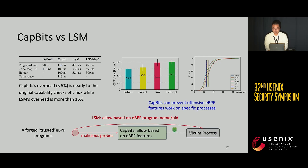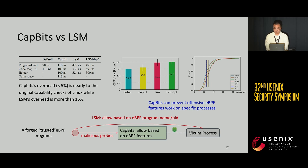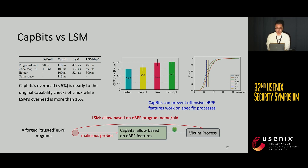Compared with LSM, cap-bit overhead is nearly equivalent to the original capability check of Linux, while LSM's overhead is more than 15%. Moreover, cap-bit can prevent offensive eBPF features from working on specific processes, allowing us to protect sensitive processes from being probed by untrusted eBPF programs.